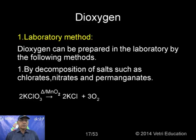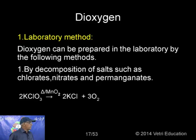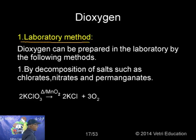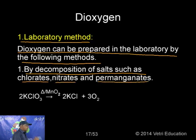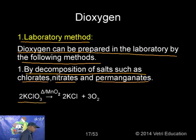Now let me discuss dioxygen. In the laboratory, dioxygen can be prepared by decomposition of salts such as chlorates, nitrates, and permanganates. Specifically, two moles of potassium chlorate heated in the presence of manganese dioxide gives two moles of KCl and three moles of dioxygen. This is the simplest laboratory method.